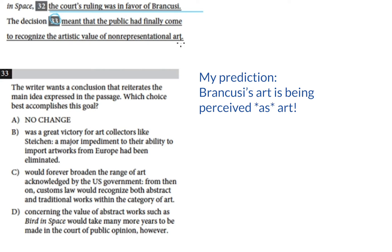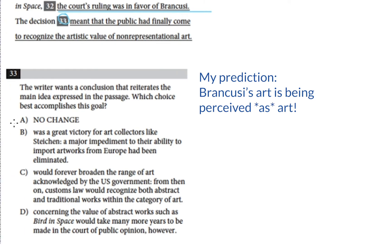The main idea is that Brancusi's art is art in the eyes of the government. And that means choice A is pretty close. Choice A is: 'the decision meant that the public had finally come to recognize the artistic value of non-representational art.' That's the no-change option — I'm not going to cross that off for now. Choice B was: 'a great victory for art collectors like Steichen — a major impediment to their ability to import artworks from Europe had been eliminated.' But that's about art collectors, not about the status of the art, so we can cross that off.